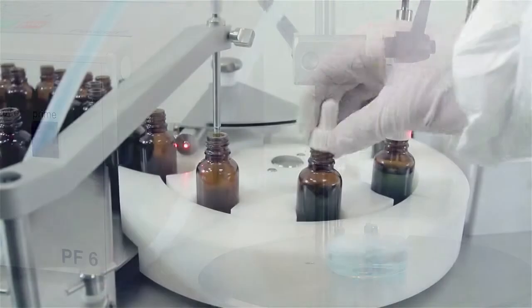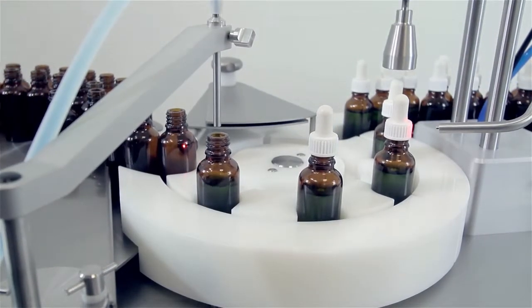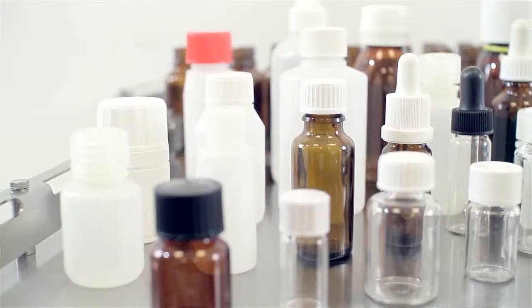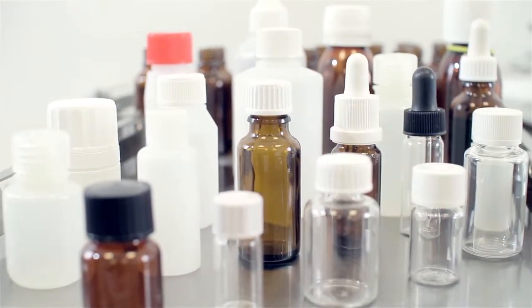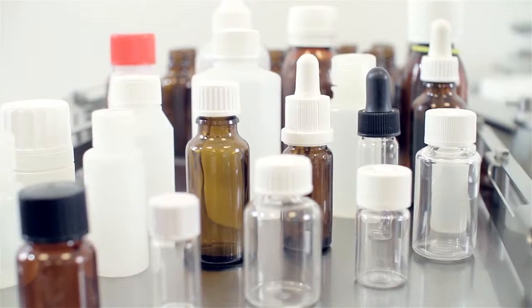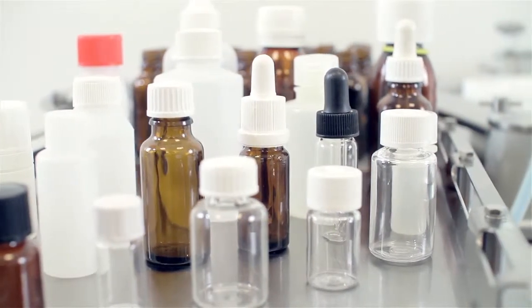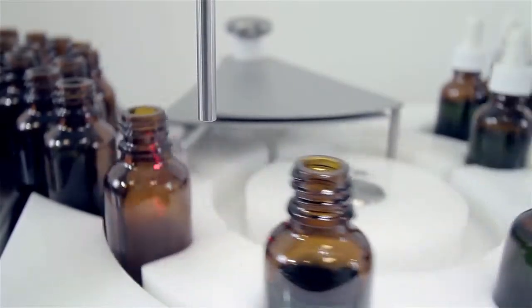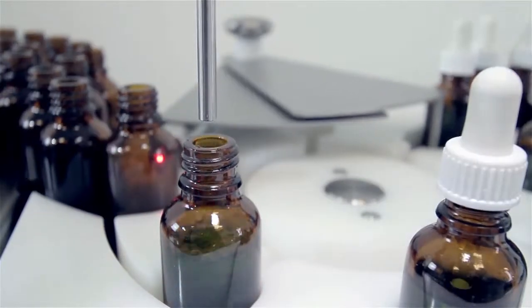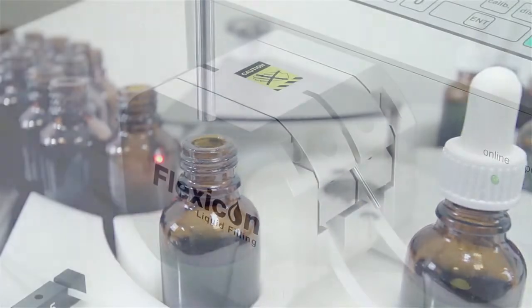The PF6 is able to fill volumes from less than 0.2 milliliters to more than 250 milliliters and a filling accuracy of plus or minus 0.5% is achievable for most volumes. This unique and consistent filling accuracy prevents costly overfilling and contributes to an excellent return on your investment.